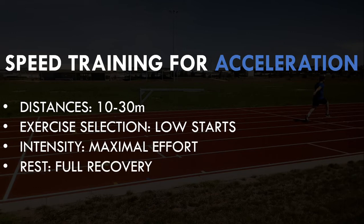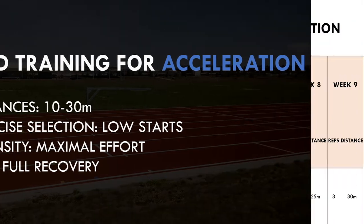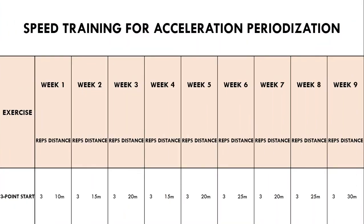This can be periodized by slowly increasing the distances of the sprints over time, allowing the athlete to build the transition to maximal speed sprinting. For example, a nine-week periodized program may look something like this: we start with shorter distances of 10 meters and slowly transition to distances of 30 meters.